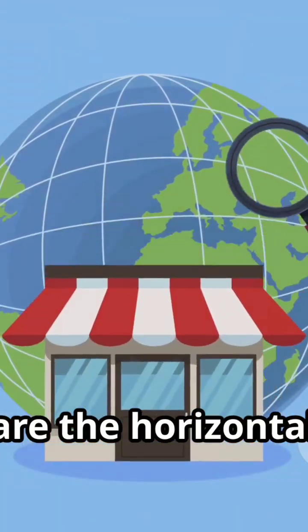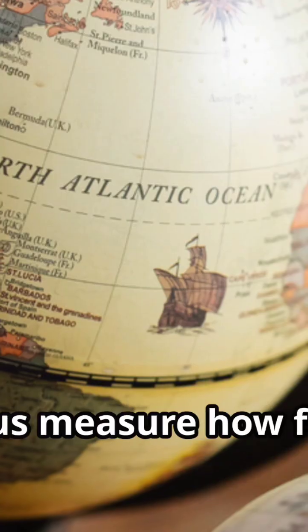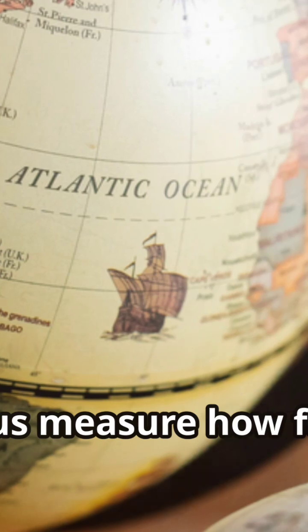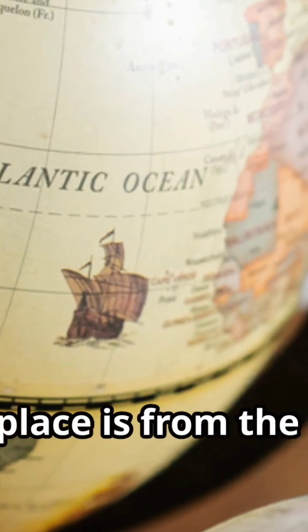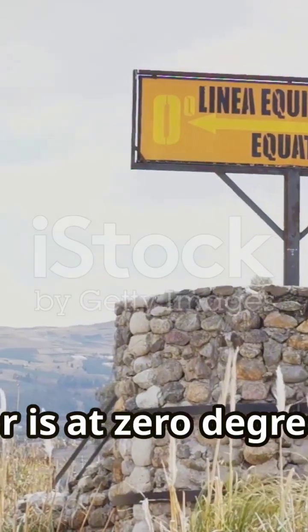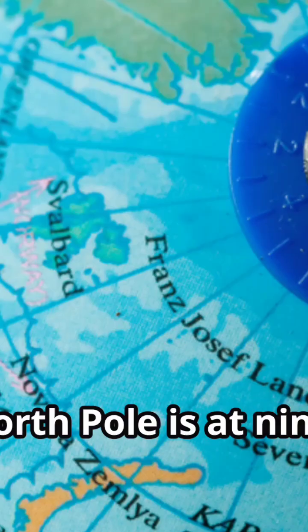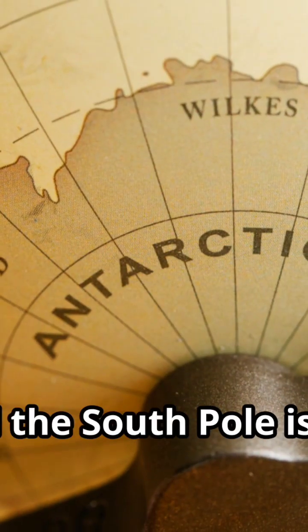Latitudes are the horizontal lines that run parallel to the equator. They help us measure how far north or south a place is from the equator. The equator is at 0 degrees latitude, while the north pole is at 90 degrees north and the south pole is at 90 degrees south.